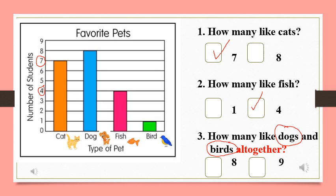Let's see, find the dogs. Go all the way up, now move across the line. Good job, eight students like dogs. Let's find the birds. That's a short bar. Move all the way to the left, follow the line. How many students like birds? Excellent, one student like birds.